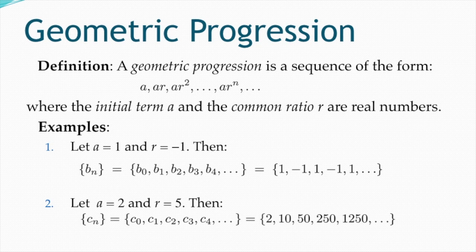For sequence c(n) with a=2 and r=5: c0 = 2, c1 = a·r = 2·5 = 10, and the third term is 2·5² = 2·25 = 50.